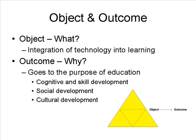First, let's consider the desired object and outcome of the activity system under consideration. Given the topic, the object of the activity system is the integration and increased use of e-learning technology into education. However, the desired outcome is more problematic and goes to a central question about the purpose of education.